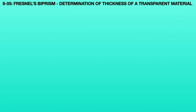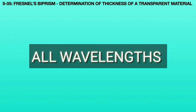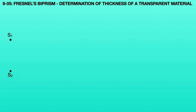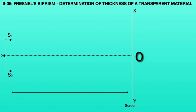Now we will discuss the determination of thin transparent film thickness using Fresnel's biprism. Consider a light source having polychromatic wavelength, meaning it exhibits all wavelengths — here we take white light. Consider two virtual sources S1 and S2, which are also white light sources. The line perpendicular to the principal axis and very far from the biprism is called screen XY. The screen and principal axis meet at point O. The distance between the two virtual sources S1 and S2 is 2D, and the distance between the screen and the source is capital D.